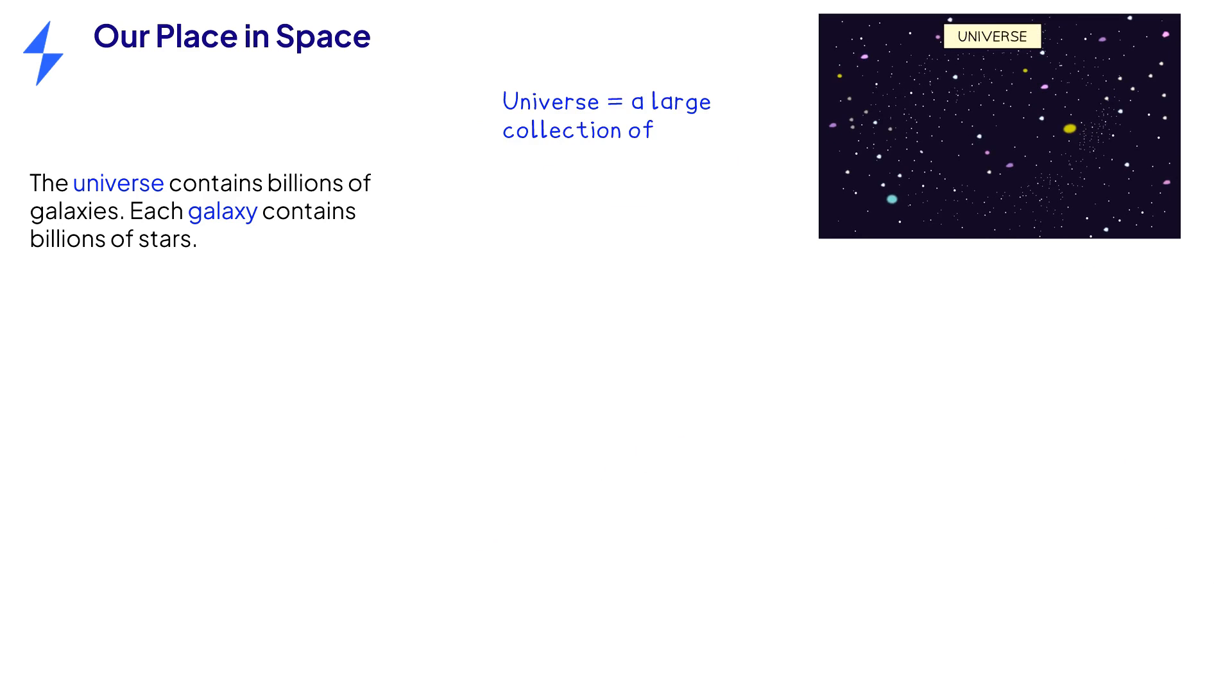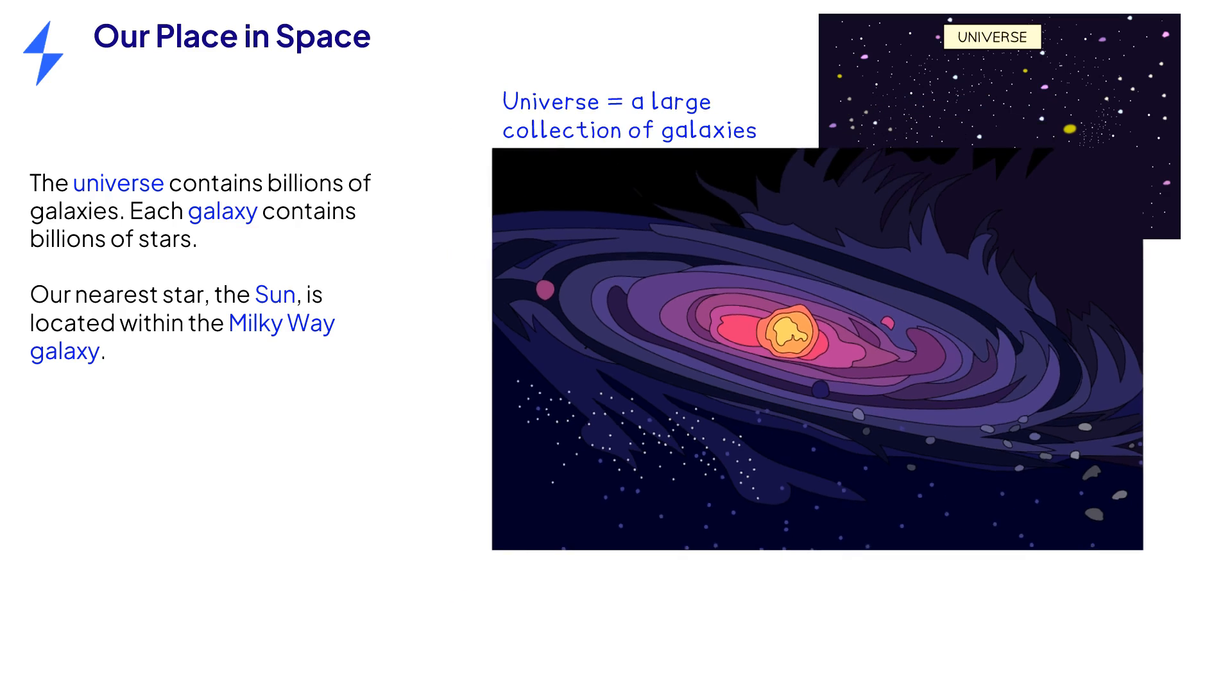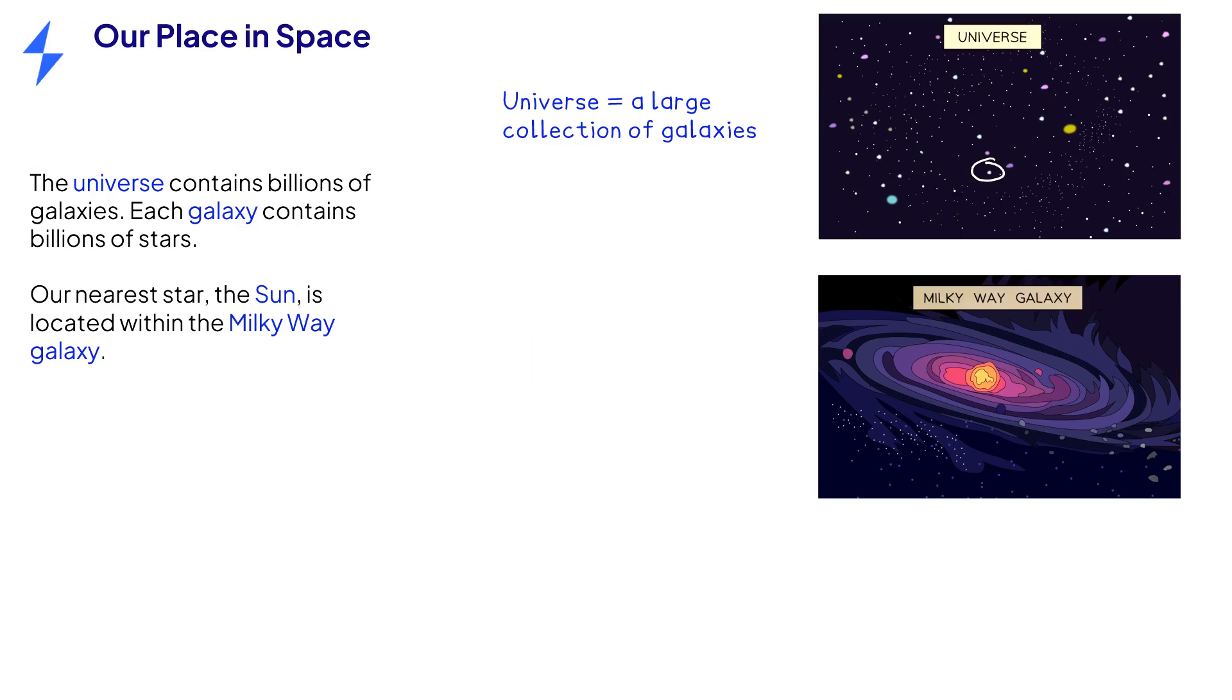The universe can be thought of as a large collection of galaxies. We live in a galaxy called the Milky Way. Our nearest star is the sun. Whilst the universe contains billions of galaxies, each galaxy contains billions of stars. A galaxy is defined as a large collection of stars.